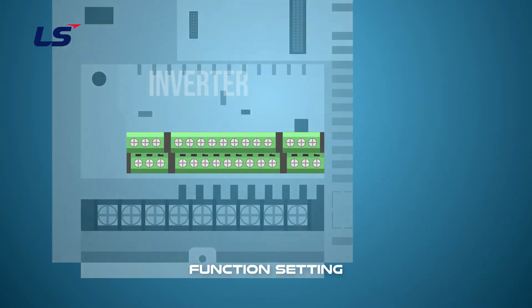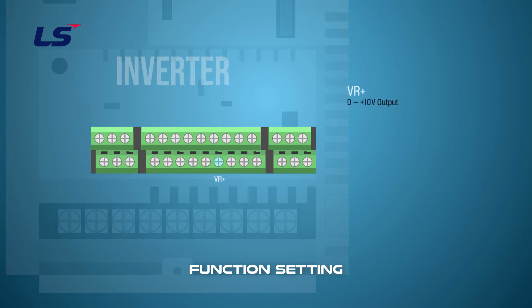The analog input-related terminals are VR plus, VR minus, V1, I1, and 5G. VR plus terminal is 0 to minus 10 volts, and V1 terminal is analog voltage input terminals. I1 is analog current input terminal, and 5G is for common terminal of analog input.